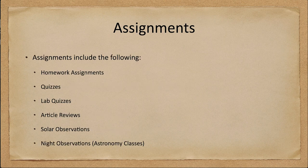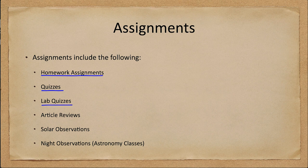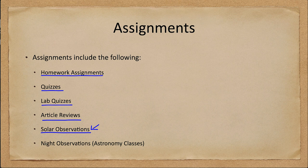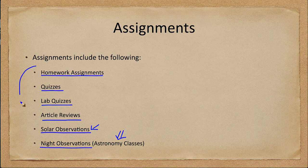We can also look at the assignments, and there are different types. There are homework assignments, review quizzes, and lab quizzes which break down the lab material for your submission. I do article reviews, solar observations which is a semester project — this is an important portion of your grade — and nighttime observations. This only applies to astronomy classes, so if you're taking a physical science class this part does not apply, although you will see all of the other sections.